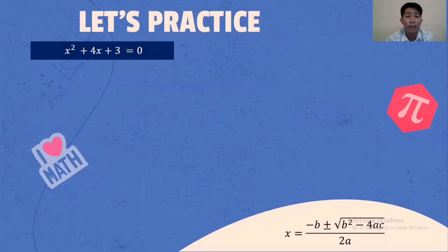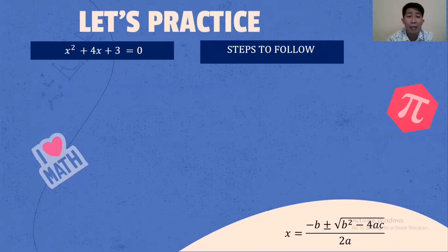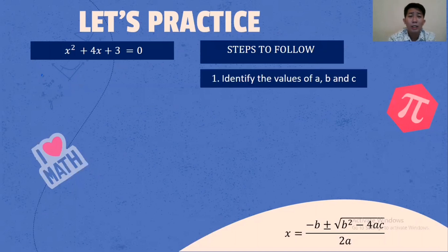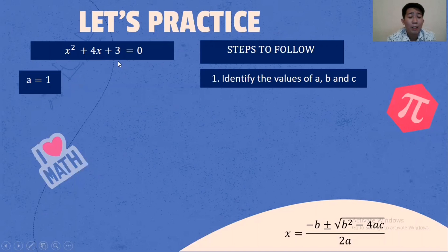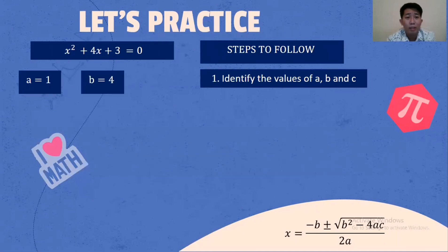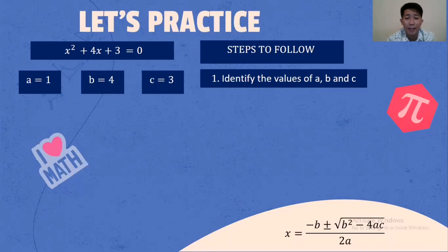Given X squared plus 4X plus 3 equals 0, there are steps to follow. Number 1, identify the values of A, B, and C. The value of A is beside X squared, B is beside X, and C is the constant. So the value of A is 1, value of B is 4, and value of C is 3.